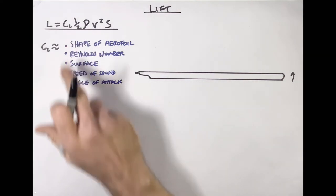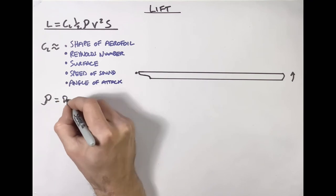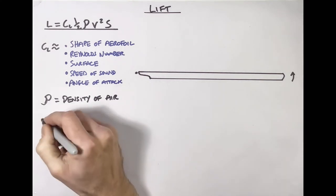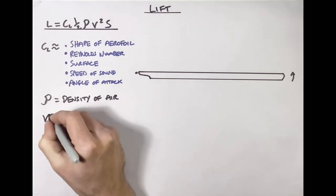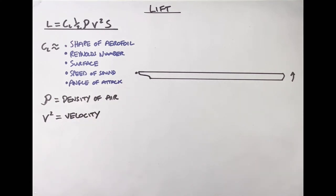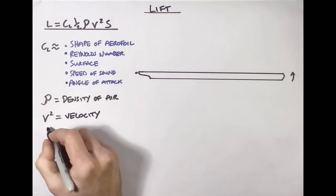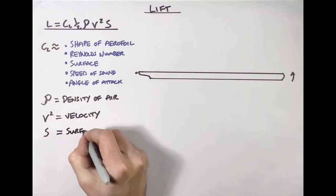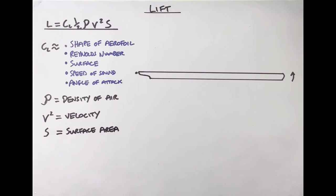That covers the various aspects of the coefficient of lift. Next in the equation we have the constant one-half, then rho — the density of the air — dependent on environmental conditions and not something we can really affect. Then velocity in metres per second, squared. And finally the surface area — quite literally the plan view of the blade: length times width, the full top-down area of the blade.